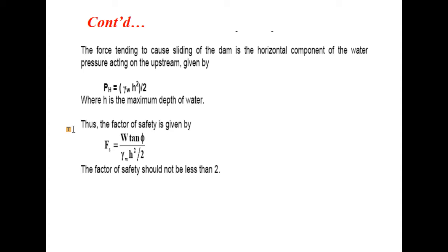The force tending to cause sliding is the horizontal component of water pressure acting on the upstream face, that is, headwater pressure P equals gamma-water times H squared divided by 2, where H is the maximum height of water. The factor of safety against sliding equals W tan phi divided by gamma-water times H squared over 2. The factor of safety must not be less than 2. W tan phi is the force resisting sliding, whereas P is the force actuating sliding.